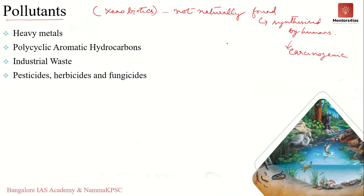The first pollutant category is heavy metals. The presence of heavy metals such as mercury, lead, arsenic, cadmium, and chromium in soil can result in it becoming highly toxic to human beings. These metals enter soil through mining activities, agriculture, e-waste, and medical waste, and can also end up polluting water sources as well.